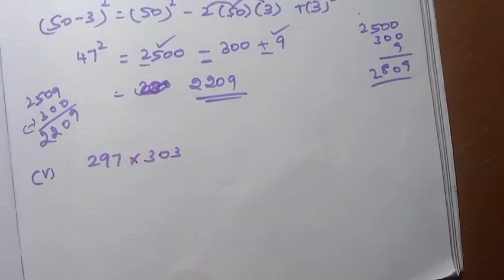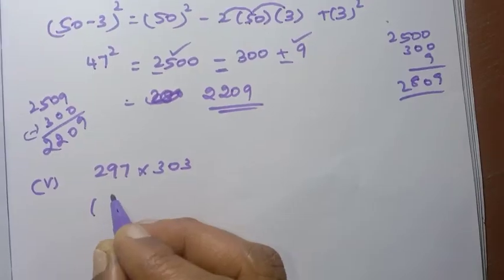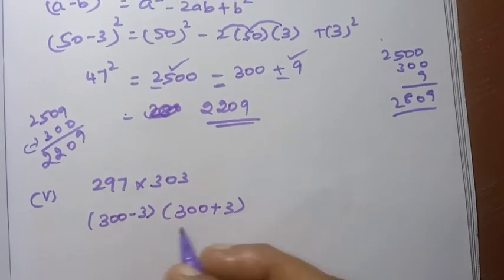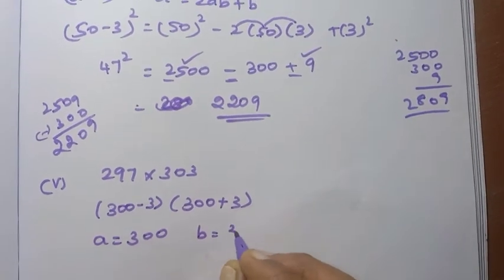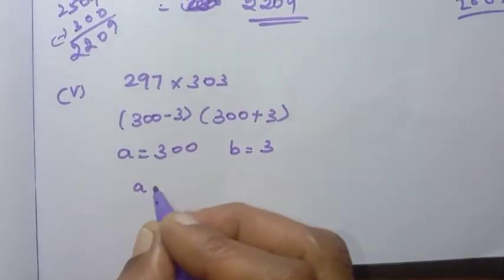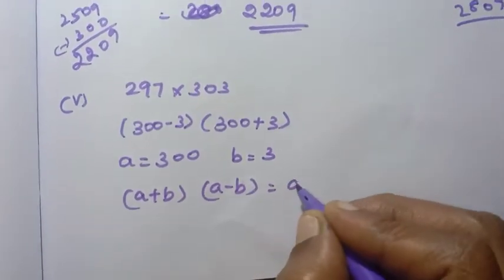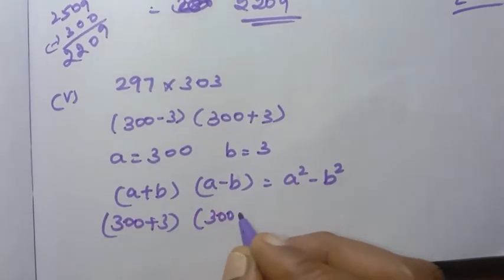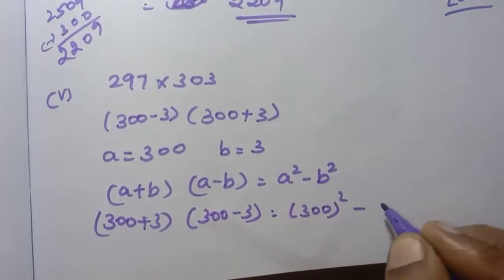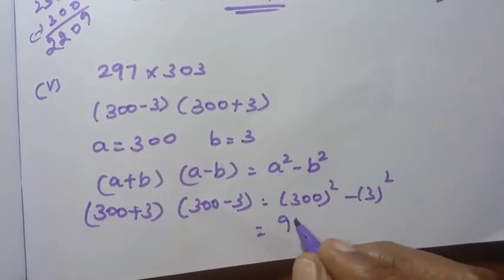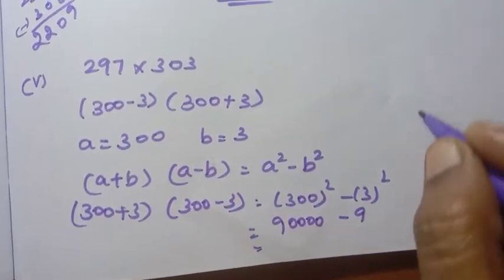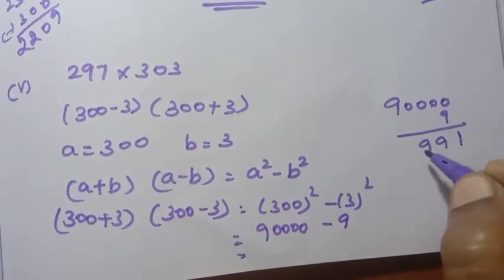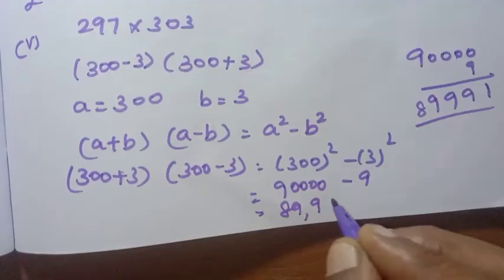Now 297 into 303. The whole number nearby is 300. So we write it as 300 minus 3 into 300 plus 3. Using the formula A plus B into A minus B equals A square minus B square, where A equals 300 and B equals 3. This gives 300 square minus 3 square, which is 90,000 minus 9, equal to 89,991. So 297 into 303 equals 89,991.